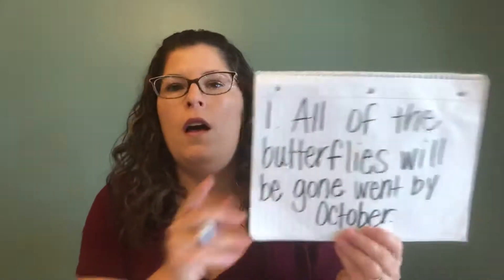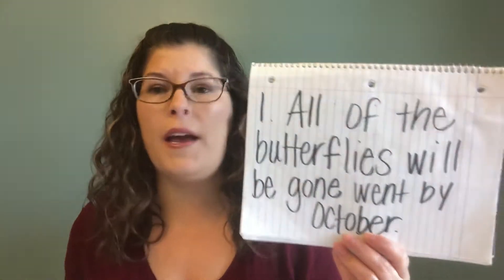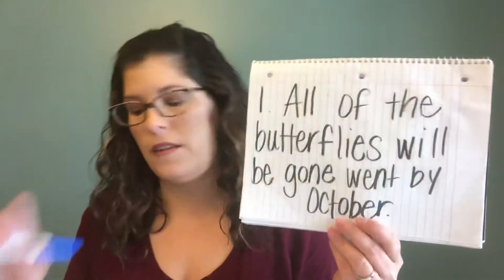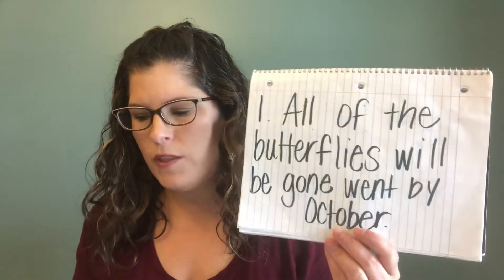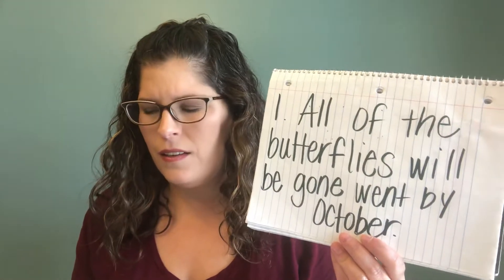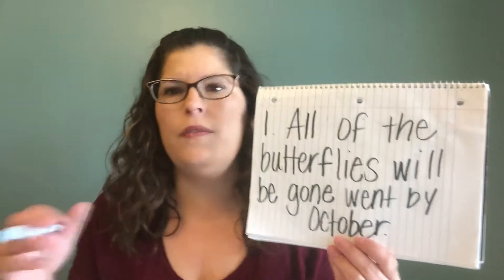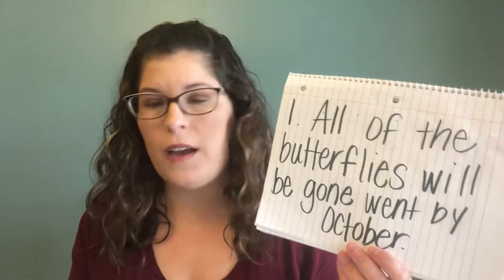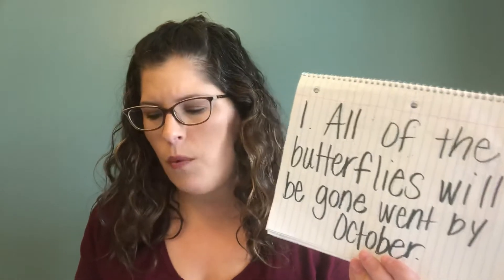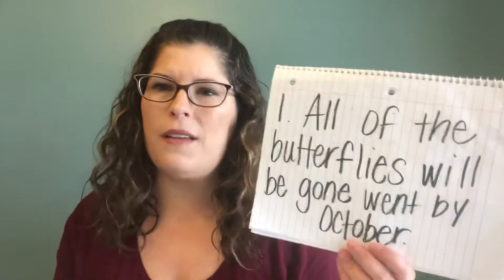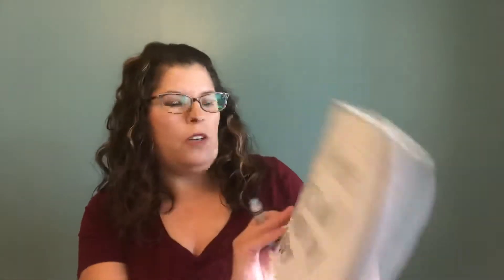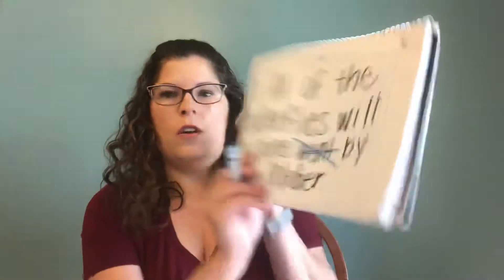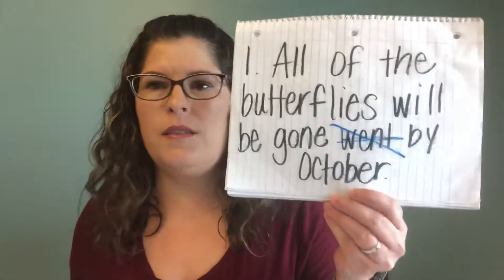So the first sentence, number one: all of the butterflies will be gone went by October. What doesn't make sense there? Let's see if we can get rid of 'went' and see if that sentence makes sense. All of the butterflies will be gone by October — that makes sense. But 'all of the butterflies will be went by October' does not. So we're going to cross out 'went.' That doesn't make any sense.